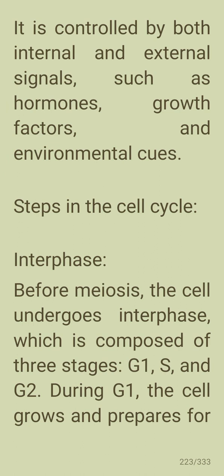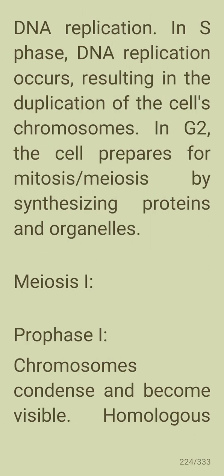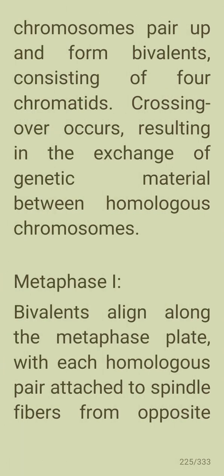Before meiosis, the cell undergoes interphase, which is composed of three stages: G1, S, and G2. During G1, the cell grows and prepares for DNA replication; in S phase, DNA replication occurs resulting in the duplication of chromosomes; and in G2, the cell prepares by synthesizing proteins and organelles. In prophase one of meiosis, chromosomes condense and become visible, homologous chromosomes pair and form bivalents consisting of four chromatids, and crossing over occurs, resulting in the exchange of genetic material between homologous chromosomes.